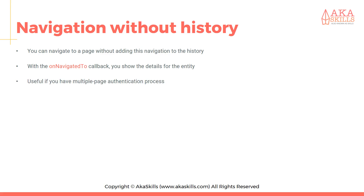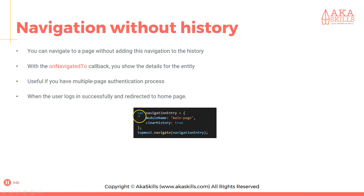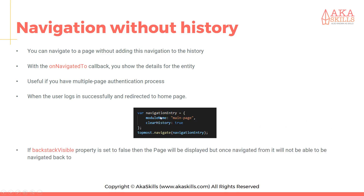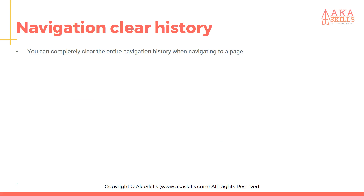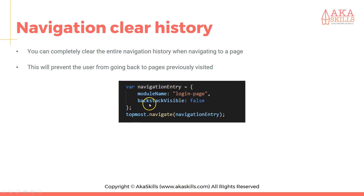Navigation without history: you can navigate to a page without adding this navigation to the history. With the onNavigatedTo callback you can show details for the entity. This is useful if you have a multi-page authentication process — when the user logs in successfully and is redirected to the home page. I'm setting the property clearHistory to true in the navigationEntry object. If backstackVisible is set to false, the page will be displayed but once navigated away from it cannot be navigated back to, which is ideal for a login page.